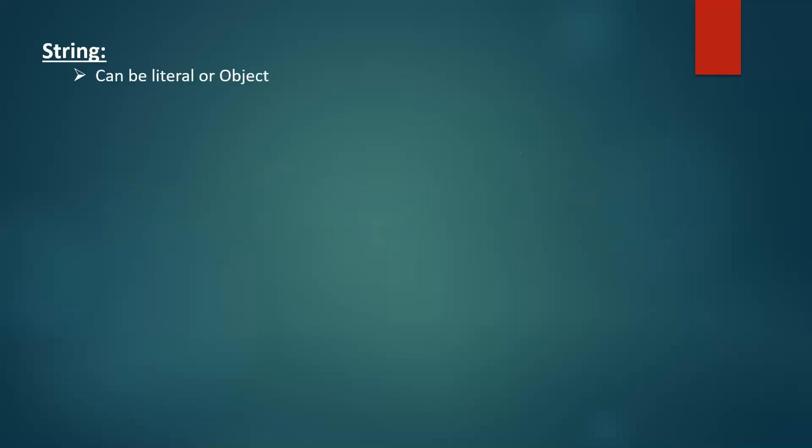First, let us understand the definitions. String can be a literal or object in Java. For example, a string literal looks like: String s = "Java". And a string object is created using the new keyword: String s = new String("Java"). This is the declaration of a string object.